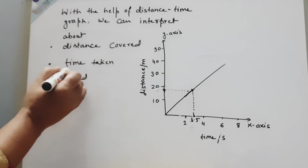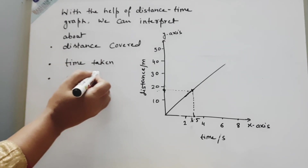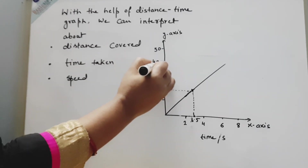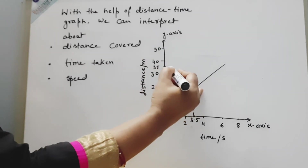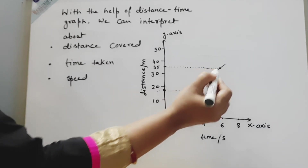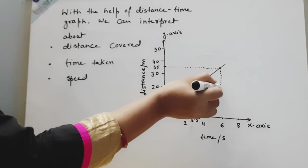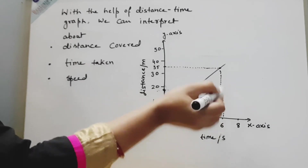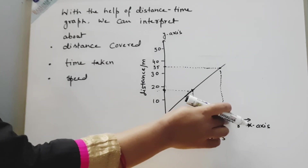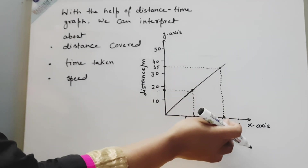For another example: how much time has been taken to cover 35 meters? Mark 35 meters on the y-axis, draw a horizontal line to meet the graph, then extend that point down to the time axis. The time taken for 35 meters is approximately 6 seconds.